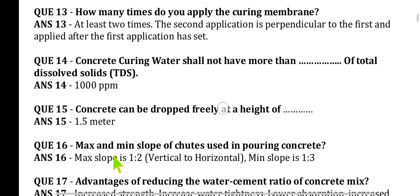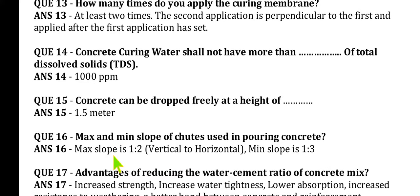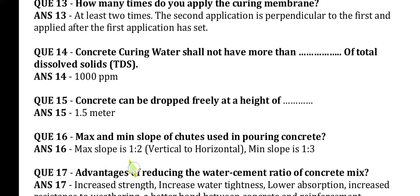Question 16: What are the maximum and minimum slopes of shoots used in pouring concrete? Maximum slope is 1 in 2 (vertical to horizontal) and minimum slope is 1 in 3.